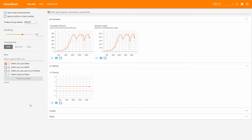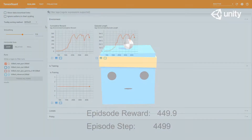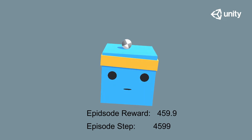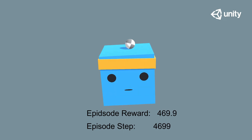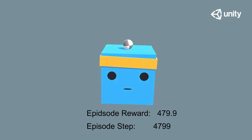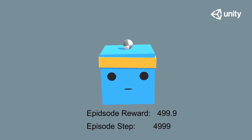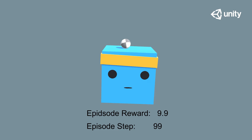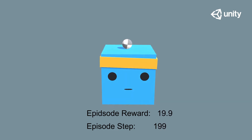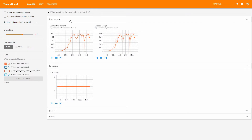Let's start with the graphs. The Cumulative Reward graph shows the reward an agent got on average per episode. In the 3D ball environment, the highest value would be 500 — that is, if the agent is holding the ball on its head for the whole episode, which lasts a maximum of 5000 steps. Why is the highest value 500? Because the agent gets a reward of 0.1 for each step without dropping the ball.